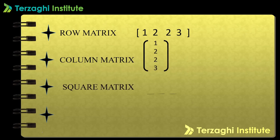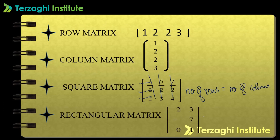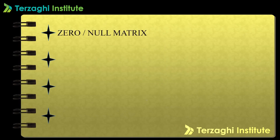Square matrix: the number of rows and number of columns are equal. For example, a 3x3 matrix has three rows and three columns. Rectangular matrix: the number of rows is not equal to the number of columns, unlike the square matrix.